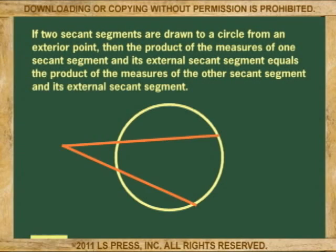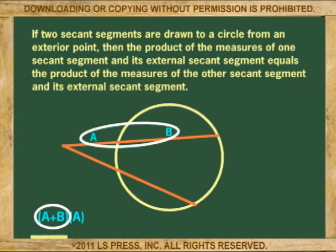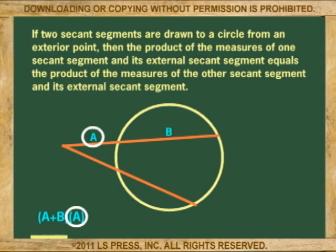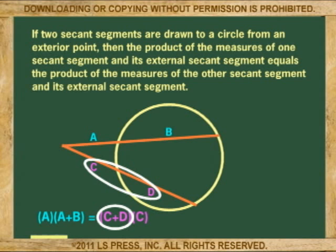If two secant segments are drawn to a circle from an exterior point, then the product of the measures of one secant segment and its external secant segment equals the product of the measures of the other secant segment and its external secant segment.